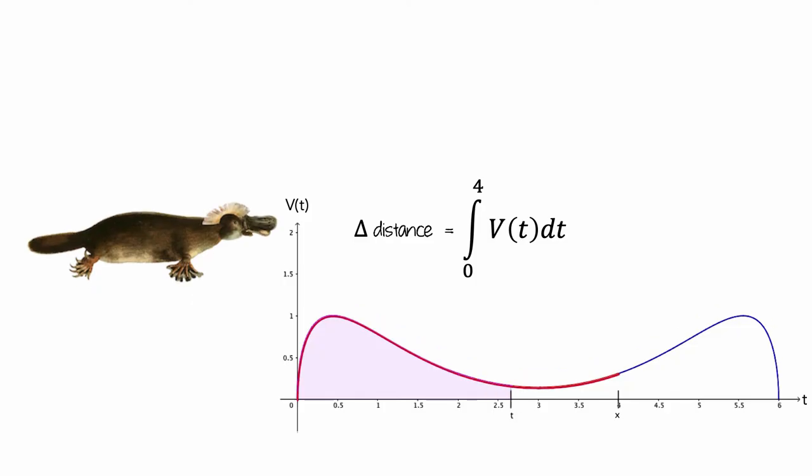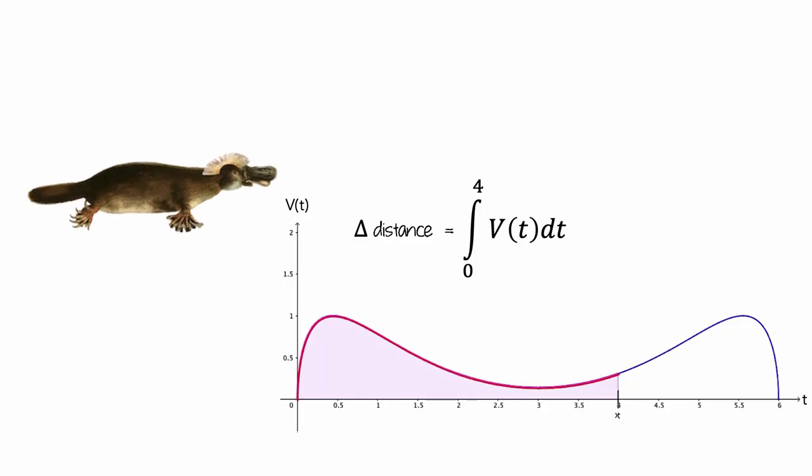And when we let the value of t increase from 2 to 4, then the value of this definite integral is represented by the area between the t-axis and the graph of the velocity function. Now, we've computed the total of the velocity function between t equals 0 and t equals 4.